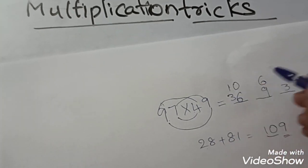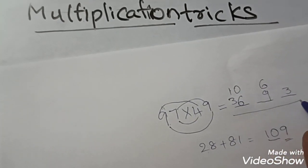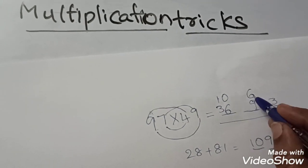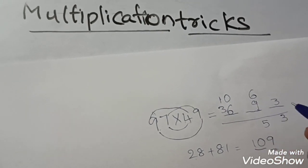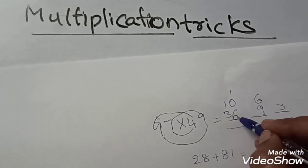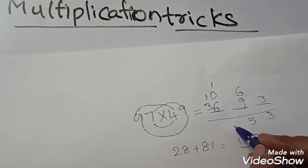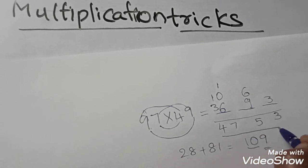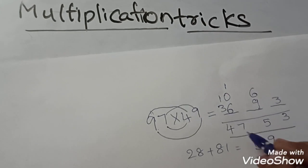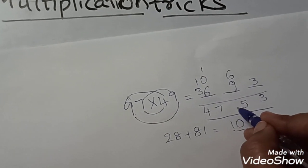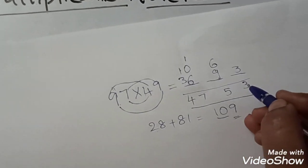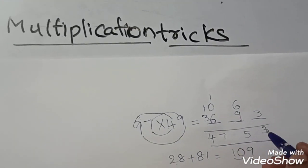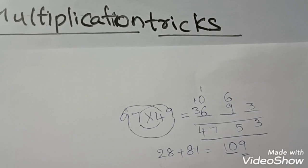This 10 we should write here. Now if we add, we will get 3, 9 plus 6 is 15, 6 plus 1 is 7, 3 plus 1 is 4. The answer is 4753. Like this, we do the multiplication in the easy method.